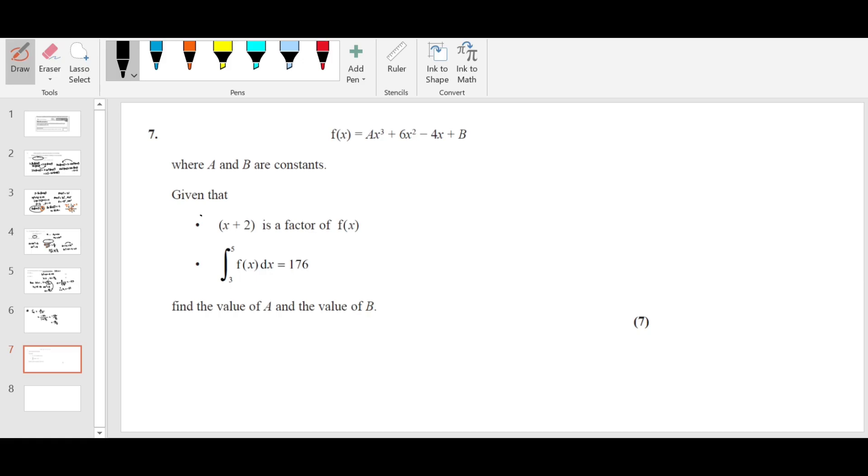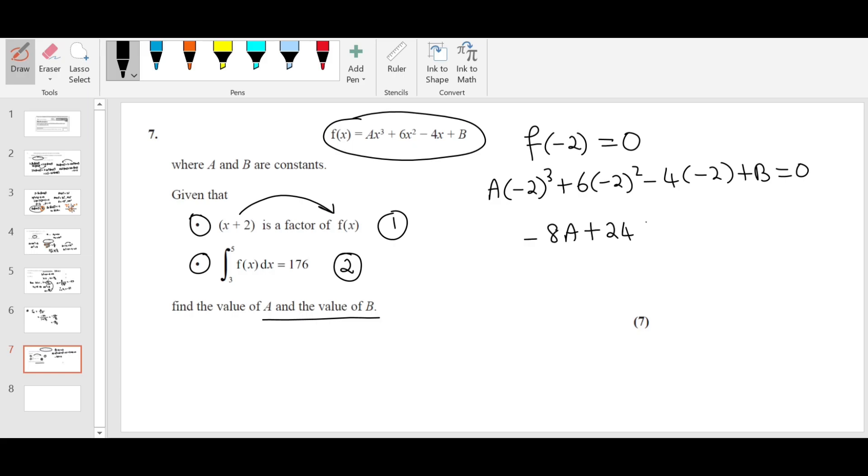Given that x plus 2 is a factor of f of x and the integral of f of x is given, you need to frame two equations, equation 1 and 2, and solve the simultaneous equations to find A and B. Let's use the first one. x plus 2 is a factor of f of x, so we replace x by minus 2. f of minus 2 will equal 0 because x plus 2 is a factor. So A times minus 2 whole cube, 6 times minus 2 whole square, minus 4 times minus 2 plus B equals 0. You'll get minus 8A plus 24 plus 8 plus B equals 0. So you'll get minus 8A plus B equals minus 32. That's equation 1.